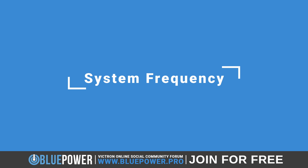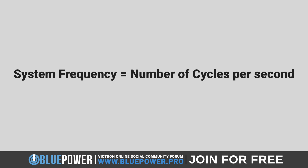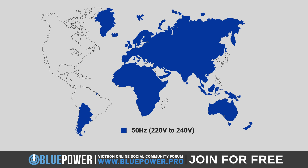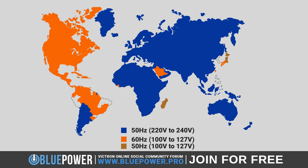Therefore, when setting up an inverter, the system frequency refers to the number of complete cycles the current goes through per second, measured in Hertz. The standard frequency of the electric current varies by country — 50 Hertz is the standard used in much of the world, including Europe, Asia, Africa, and Australia, while 60 Hertz is commonly used in North America, parts of South America, a few countries in Asia like the Philippines, as well as parts of Japan.